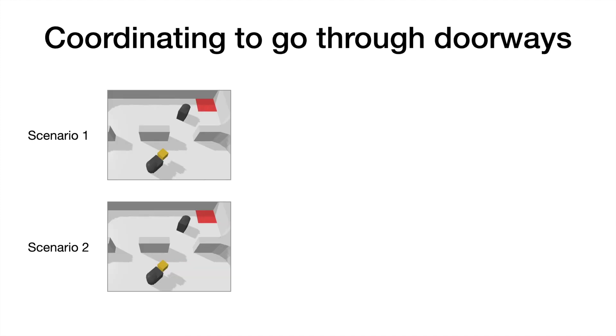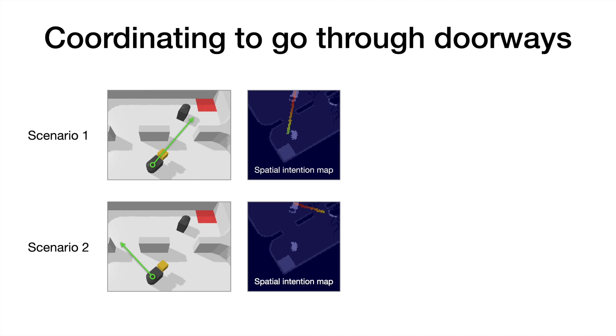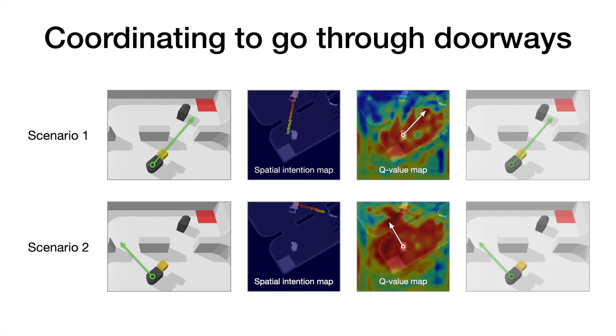Here is another pair of scenarios, this time with two doorways. In each scenario, we choose a different doorway for the robot that is holding an object. And then we look at how the Q value map is affected for the other robot near the receptacle. In both cases, we see that the robot near the receptacle selects a doorway that is unoccupied.